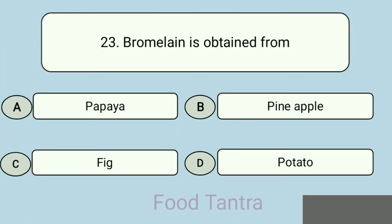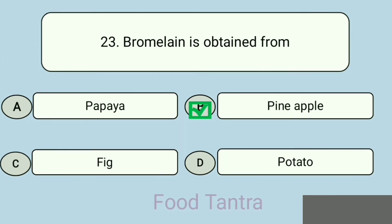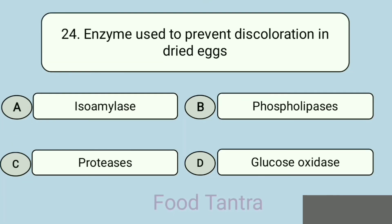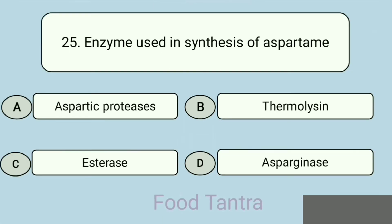Question 23: Bromelain is obtained from — Option A: Papaya. Option B: Pineapple. Option C: Fig. Option D: Potato. Correct answer: Pineapple. Question 24: Enzyme used to prevent discoloration in dried eggs — Option A: Isomalase. Option B: Phospholipases. Option C: Proteases. Option D: Glucose oxidase. Correct answer: Glucose oxidase.